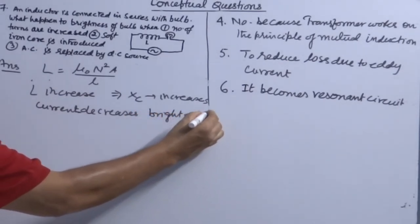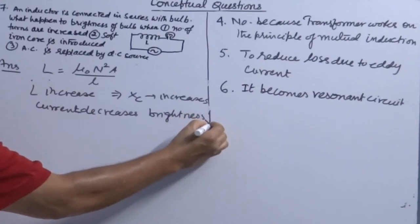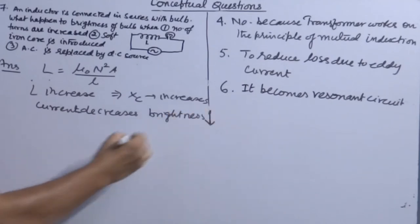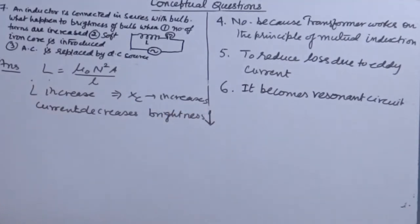This means brightness decreases. To repeat: L = μ₀N²A/l, L increases, XL increases, therefore current decreases.